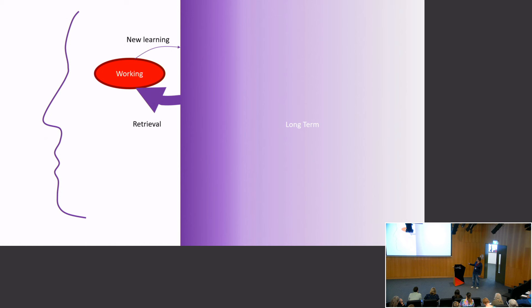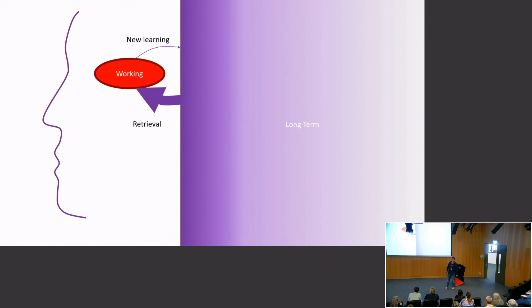The model of the mind we're using is working memory and long-term memory — we don't know exactly where they are, and cognitive load theory is not neuroscience. It's a bit like a London tube map: meaningful, but not telling you exactly mechanically how it all functions. We've got a working memory that's extremely limited. We've got a long-term memory that, to all intents and purposes, is limitless — no one has ever yet come up against the limits of human long-term memory.